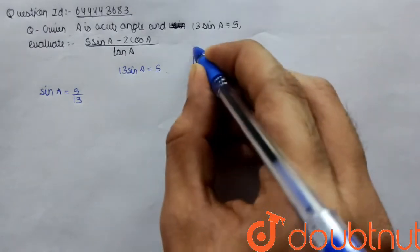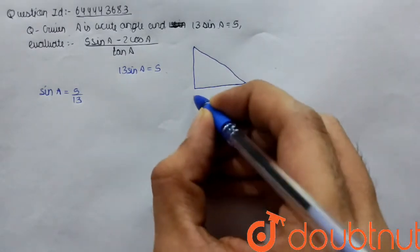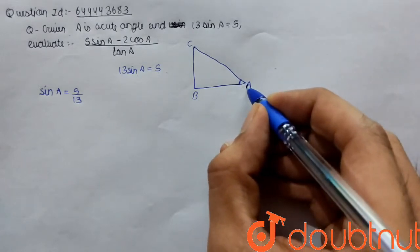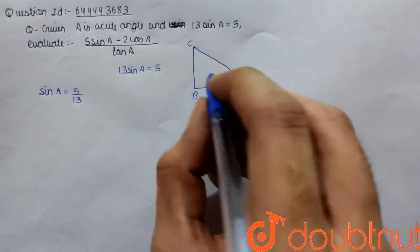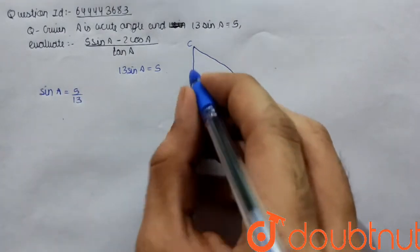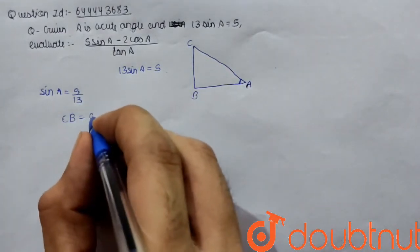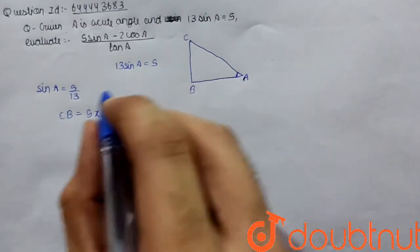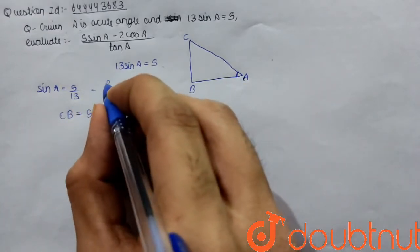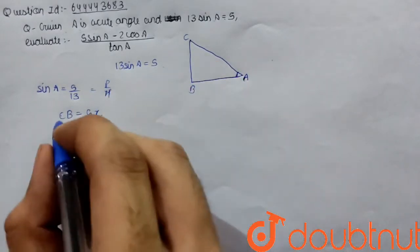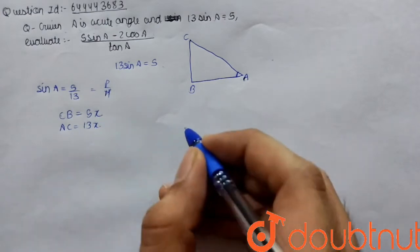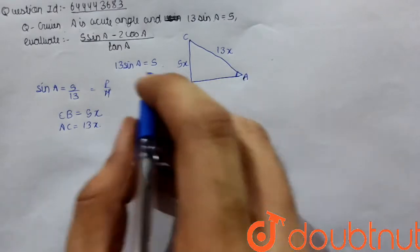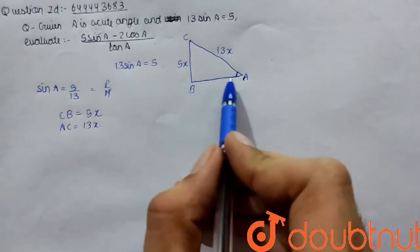We have a right-angle triangle ABC with the right angle at B. We are talking about angle A. Sin A equals perpendicular upon hypotenuse, so the perpendicular CB equals 5x, where x is a common factor. The hypotenuse AC equals 13x. We still need to find BA.